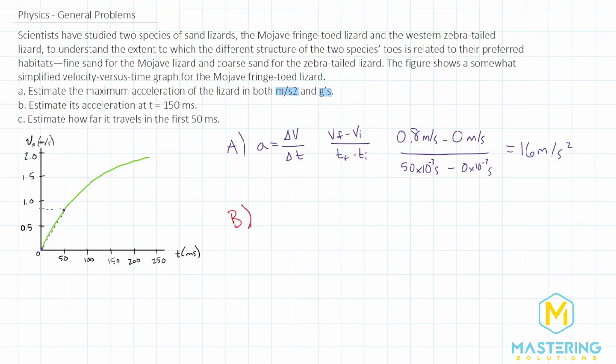Moving on to part B, they want us to give an estimation of the acceleration at a time of 150 milliseconds. We'll do the same thing. So right here at 150, the velocity is probably 1.6 or something. We're going to use the same principles down here though, and we'll take it from 100 milliseconds to 200 milliseconds, because that is an average roughly the same of what the tangent line would be at that point anyways. So the same thing, the final velocity we'll say is 1.8 meters per second minus the velocity there, let's say 1.3.